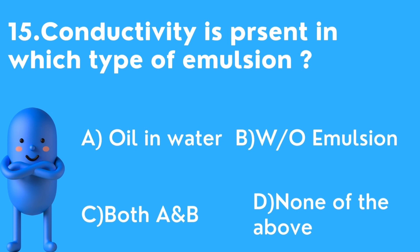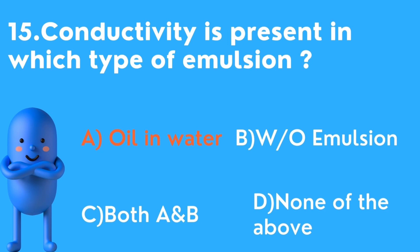Fifteenth question: Conductivity is present in which type of emulsion? Options are oil-and-water, water-and-oil, both, or none. In an oil-in-water emulsion, water is the continuous phase and water conducts electricity, so oil-in-water is the correct answer.